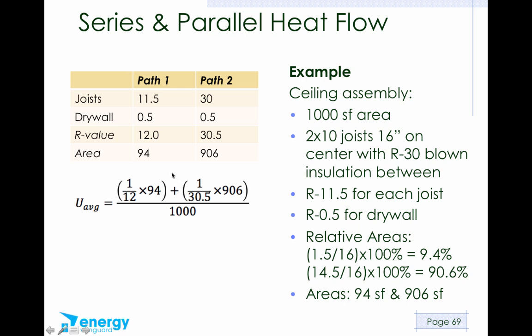Here's our equation now. The average U value is U1 times A1. So U1 is 1 over R12, and the area is 94. U2 is 1 over 30.5, and area 2 is 906. So if we work that out, 94 divided by 12, remember that little shortcut there, is 7.83. And 906 divided by 30.5 is 29.7.